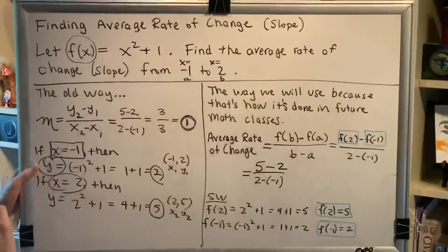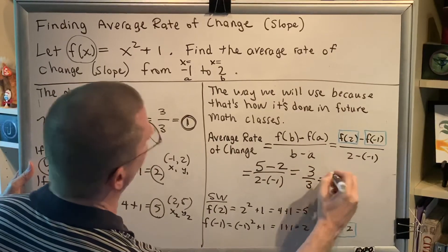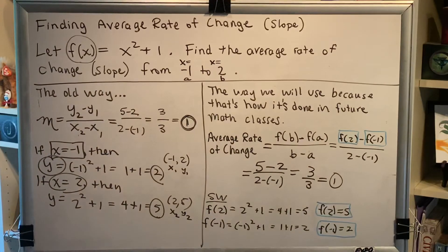Notice that this exactly matches our previous approach. So we get 3 divided by 3, which is 1. The average rate of change is 1.